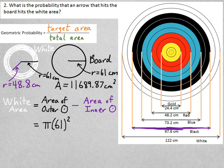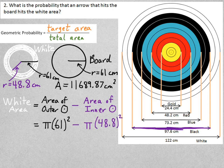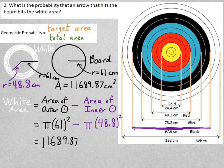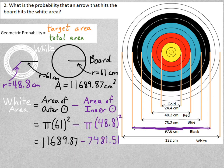The outer circle would have an area of pi times 61 squared. And the inner circle would be pi times 48.8 squared. So that outer circle is 11,689. Oh yeah, that's the whole board. Then the inner circle has an area of 7,481. So subtracting the two, the area of the white ring would be 4,208.35.